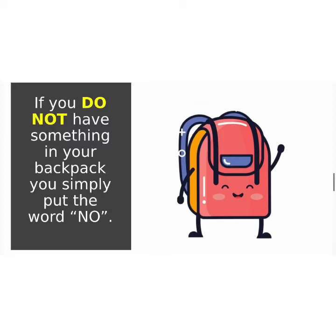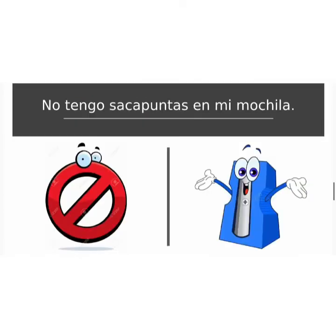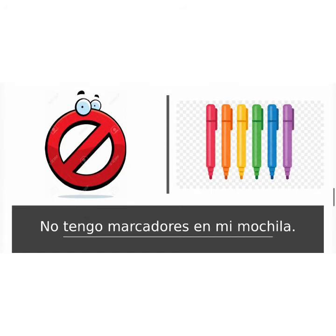Now, if you do not have something in your backpack, all you have to do is simply put the word no in front of the sentence. For example: No tengo sacapuntas en mi mochila — I do not have a sharpener in my backpack. What about: No tengo marcadores en mi mochila? Muy bien — I do not have markers in my backpack. Notice, all I did was insert the word no.